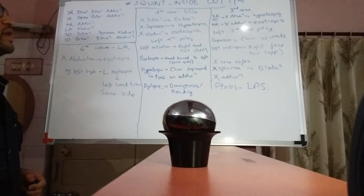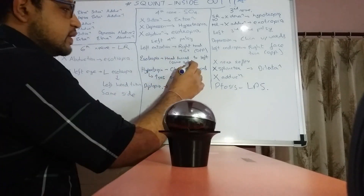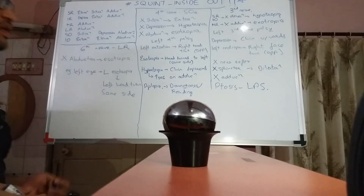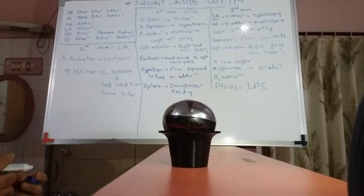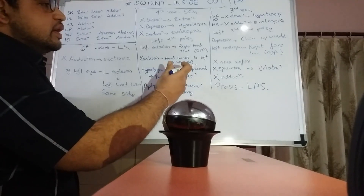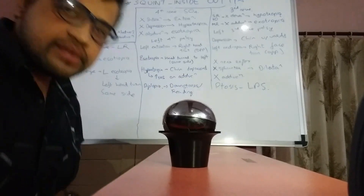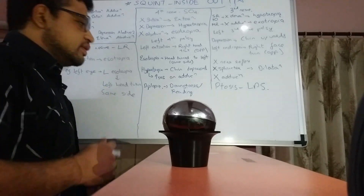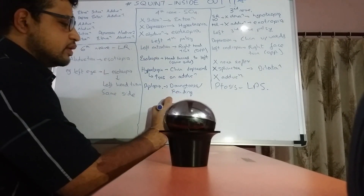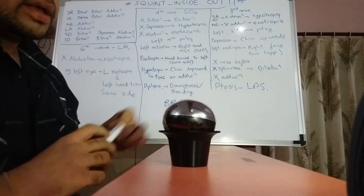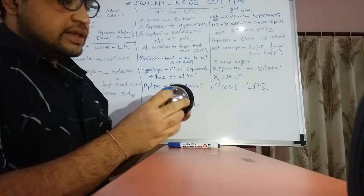Hello friends, this is a video about squint from the inside out. People are very afraid about squint, but once you get these things clear — why does the head tilt, why is the chin depressed — we are going to discuss third, fourth, and sixth nerve palsies. Once you understand the core mechanism logically, these MCQs and concepts become easy. The prerequisite is just a brain and a bit of common sense.